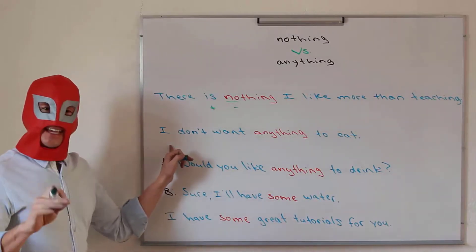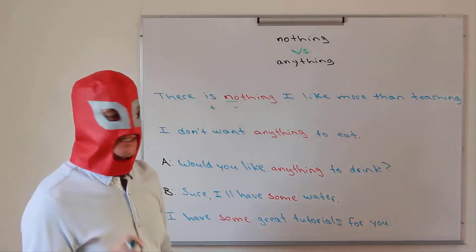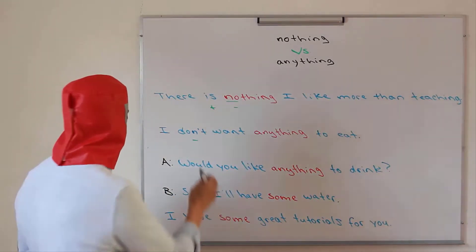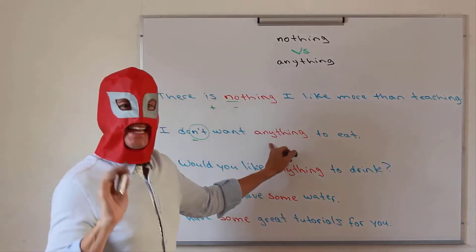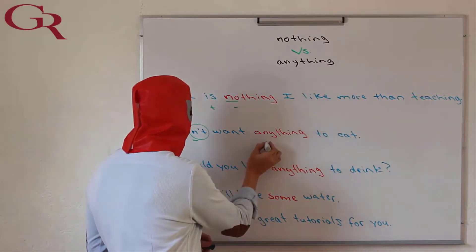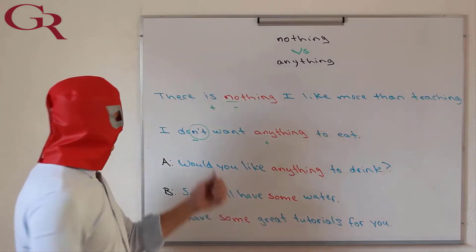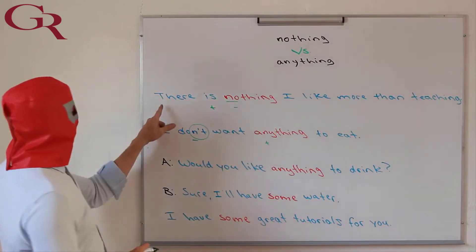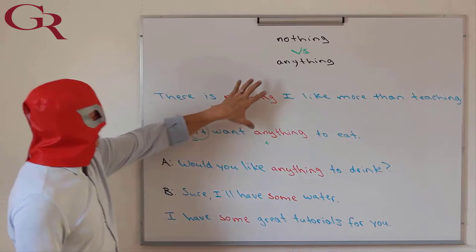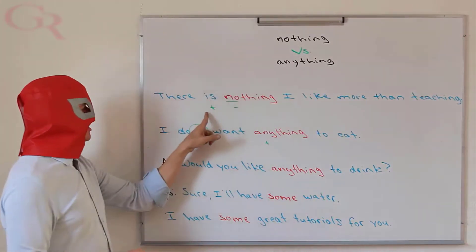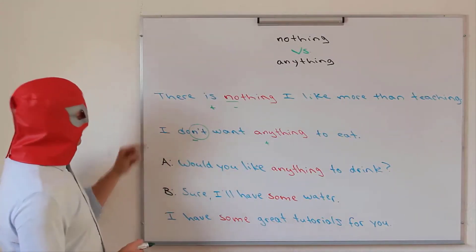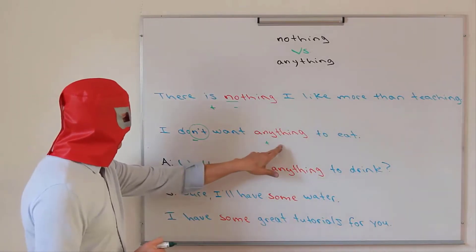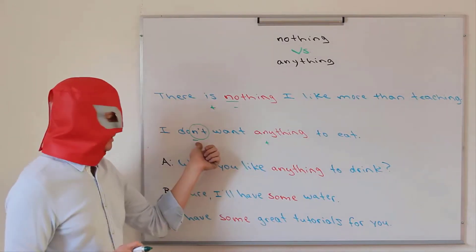In the second example: I don't want anything to eat. Here you can see that your auxiliary 'don't' is negative. So the word to use is 'anything' — why? Because this word is affirmative. As I said, negative and affirmative is going to be negative. Going back to these two one more time: 'there is nothing I like more than teaching' — I'm using nothing because my verb is affirmative. Second example: 'I don't want anything to eat' — the word to use is anything because my auxiliary is negative.